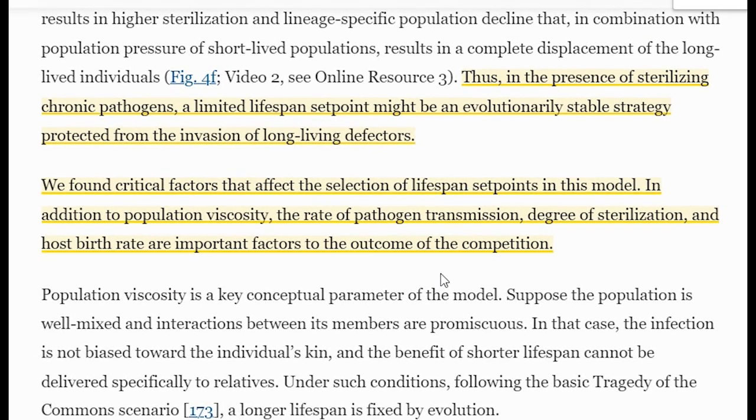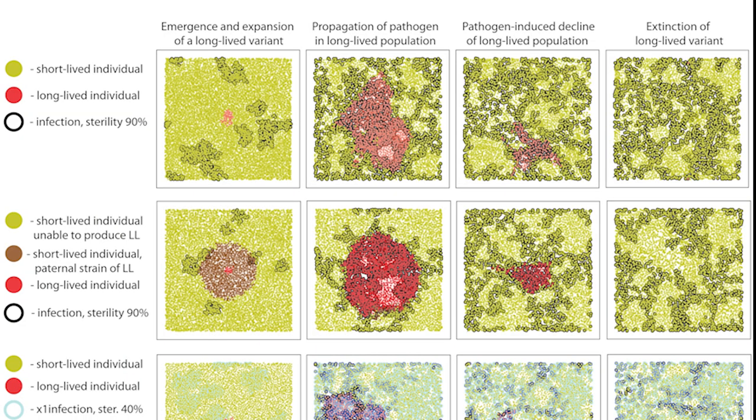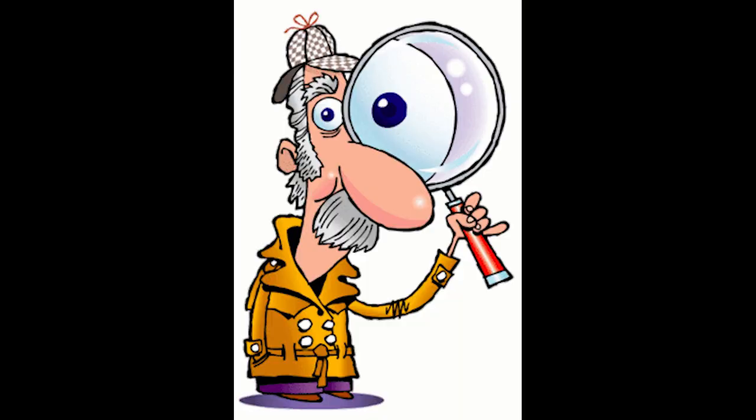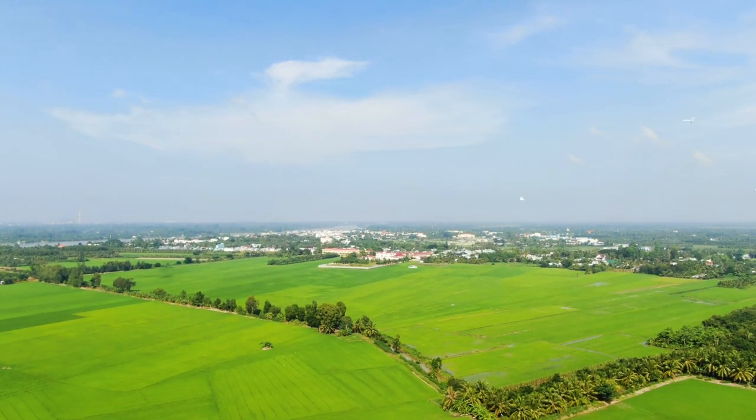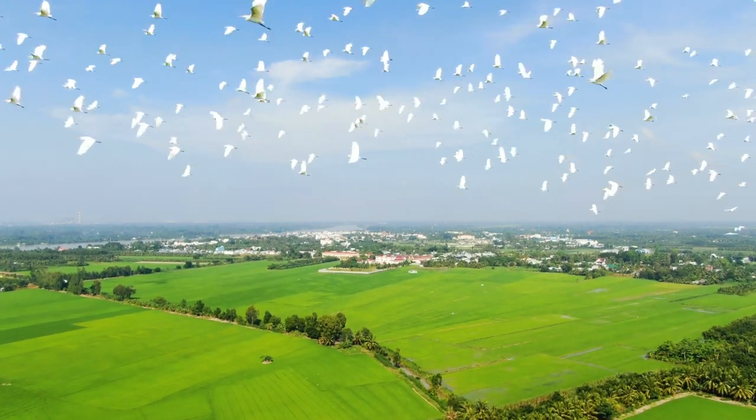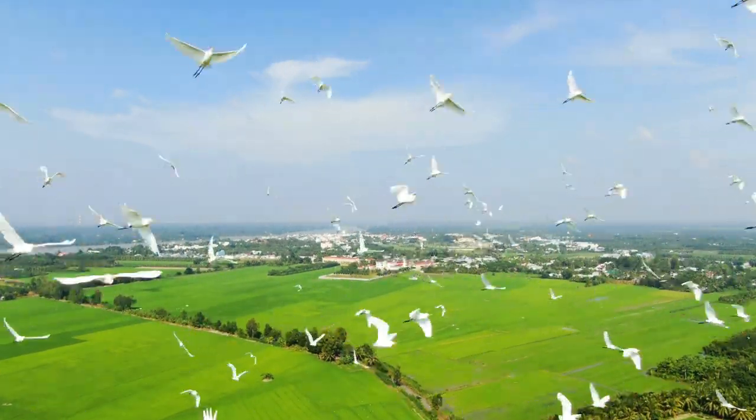So where is the evidence? Well, firstly, it can be modeled, but more importantly, it can be observed. Take flight for example. Flight may also reduce pathogen transmission by enabling animals to avoid contact with infected individuals or contaminated environments.